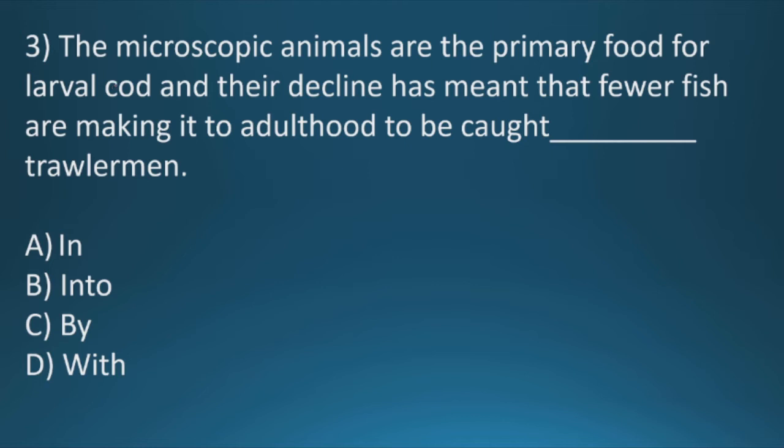Question three: The microscopic animals are the primary food for larger cod and their decline has meant that fewer fish are making it to adulthood to be caught dash trollerman. Here the correct option will be by. Caught in is not correct, caught into again not correct, caught with, no. So our option C will be the correct answer, that is by.